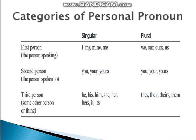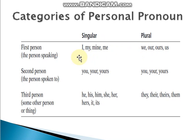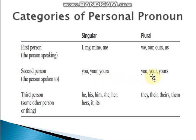So categories of personal pronouns — let's look at a table. First person, second person, and third person, in both singular and plural. In singular, first person — the speaking person — uses: I, my, mine, me. In plural: we, our, ours, us. In second person singular: you, your, yours. For plural, the same: you, your, yours.